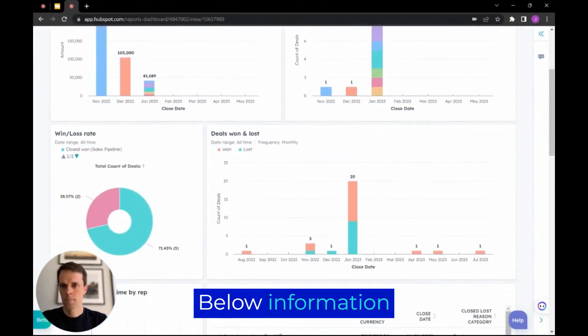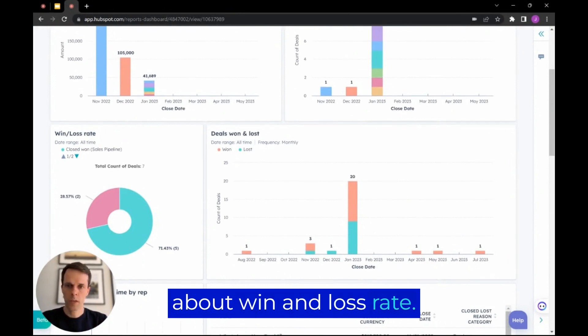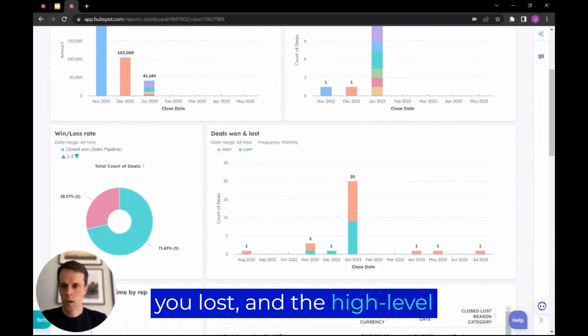Below, information about win and loss rate. Again, the distribution over time. So we can see the ratio between what you won and what you lost and the high level metric for win and loss rate.